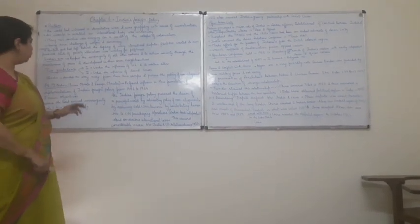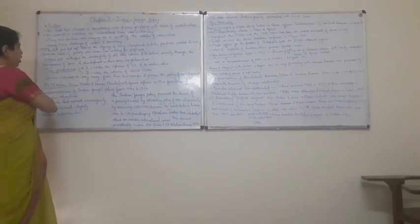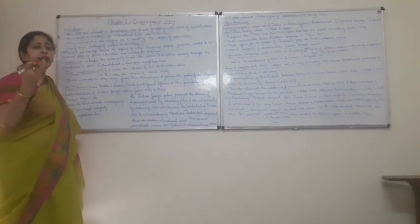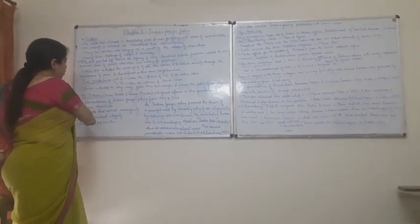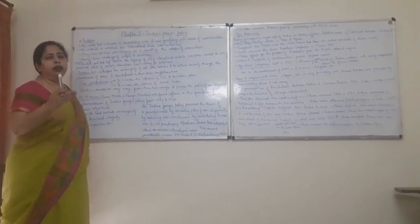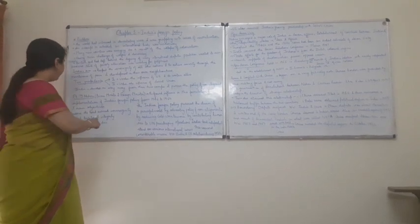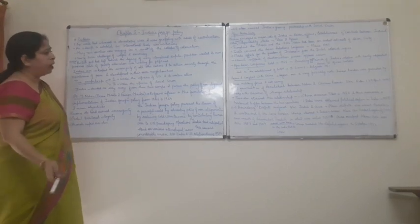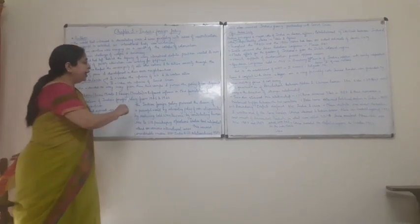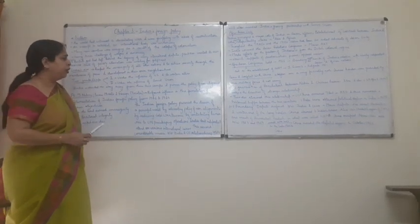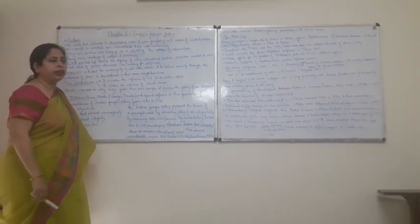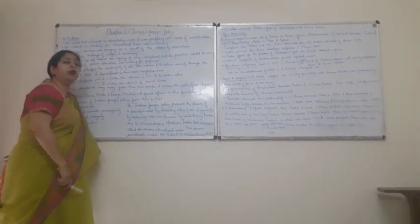Pandit Jawaharlal Nehru had three main objectives as far as India's foreign policy is concerned. The first was to preserve the hard-earned sovereignty. The second objective was to protect the territorial integrity — since partition had already taken place, India wanted no further such problems. The third was to promote rapid economic development to alleviate the country from severe poverty. The Indian foreign policy pursued the dream of a peaceful world by advocating non-alignment, by reducing Cold War tensions between the Soviet Union and the United States, and by contributing human resources to UN peacekeeping operations.